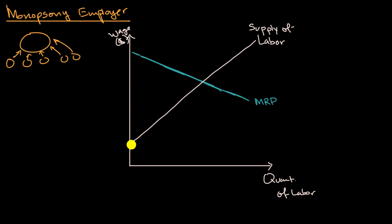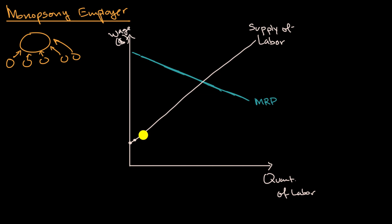You might be tempted to say this supply curve is going to be the marginal factor cost curve of labor. But remember, we're making the assumption that even a monopsony employer, if it has to raise the wage to get that second unit of labor, it has to raise the wage for everyone. So as it hires more and more, it's not just paying the incremental amount to that incremental person — it has to pay it to everyone. So its marginal factor cost is going to go up twice as fast, and the marginal factor cost curve is going to look like this.